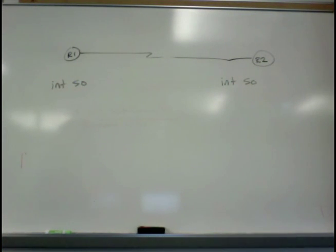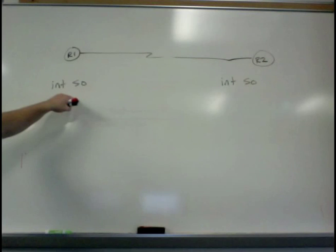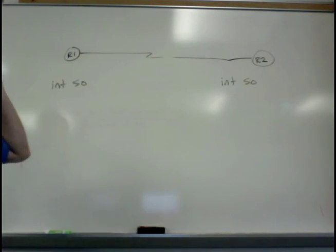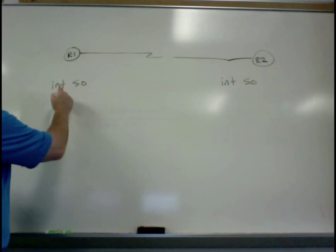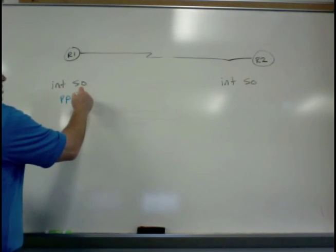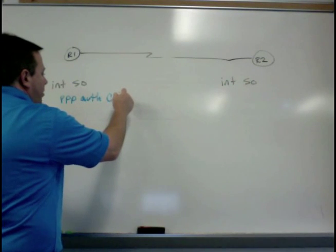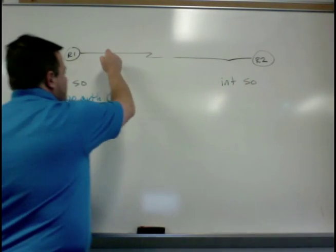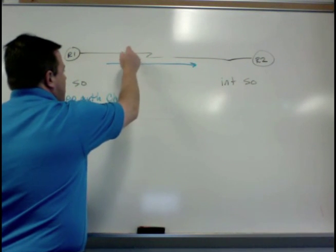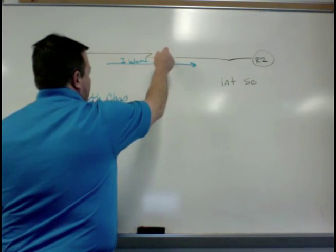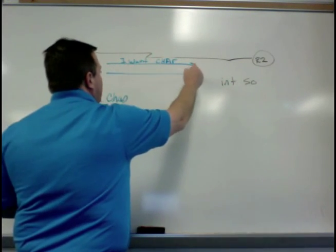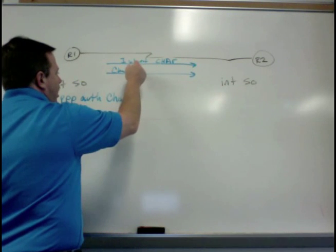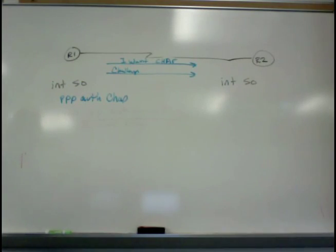Let's start with this side. I want this side again to be the authenticator. He's going to be the one to say, hey, you've got to authenticate to me. So this side is going to have PPP authentication CHAP now. So this side is going to say I want CHAP, and it's going to immediately follow it up with the challenge. So the challenge gets sent across.